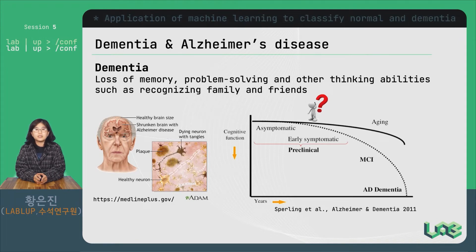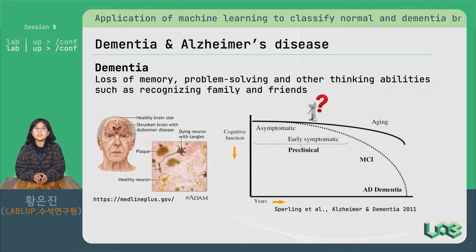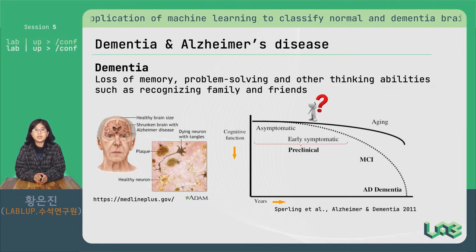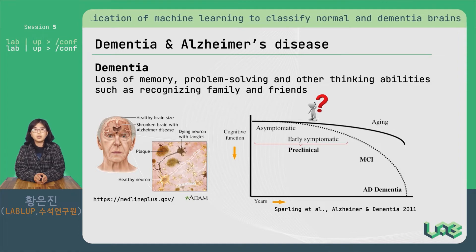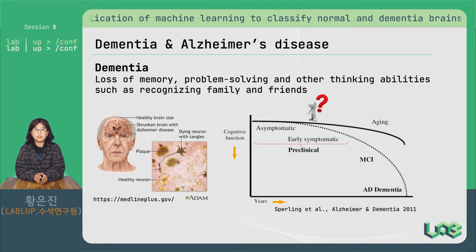Dementia is a general term for describing symptoms like loss of memory, problem solving, and other thinking abilities such as recognizing families and friends, and Alzheimer's disease is the most common cause of dementia. When we examine the brain of Alzheimer's disease patients, we can observe a severe loss of brain volume, especially in parts related to learning, memory, planning, and execution. If we take a closer look into the brain tissues, neurons are damaged and even dying due to pathological substrates called plaques and tangles.